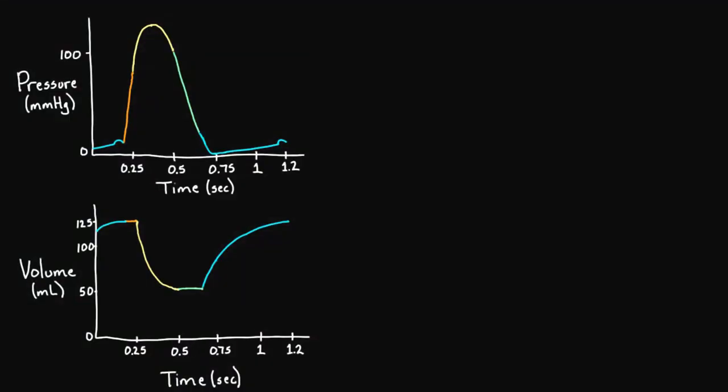So what do you see here? You see two figures. On the top figure, you've got pressure and time. And this is actually the pressure of the left ventricle over some period of time. In this case, about 1.2 seconds. And on the bottom, you've got volume over time.